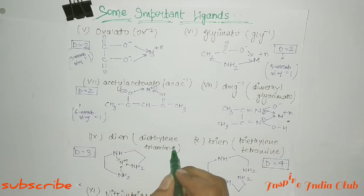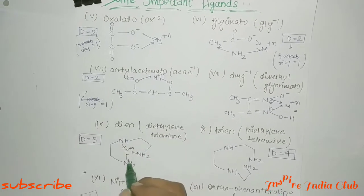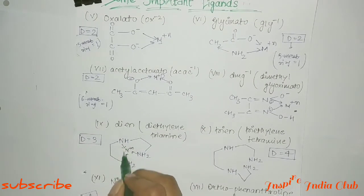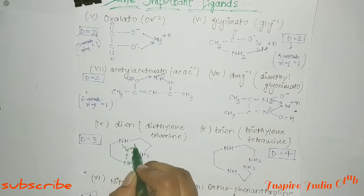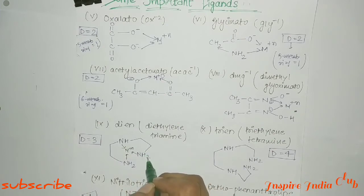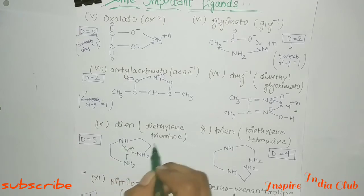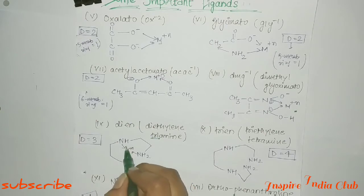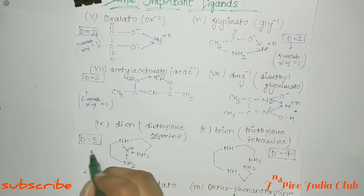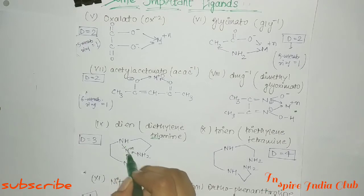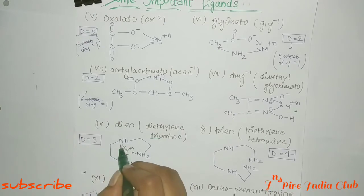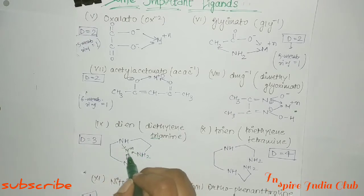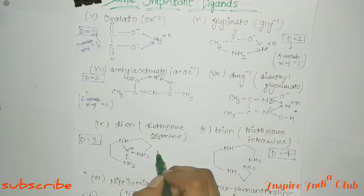Next is diethylene triamine, abbreviated 'dien'. You first make ethylene diamine and replace one NH2 hydrogen with a -CH2-CH2-NH2 group. This gives 3 nitrogen atoms in the structure. All 3 nitrogen atoms donate their lone pairs to the complex forming metal, so denticity is 3. After donation you get 2 five-member rings formed.